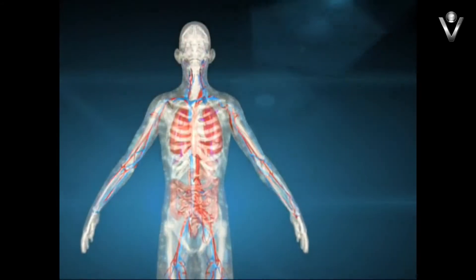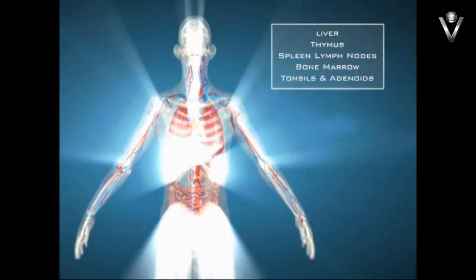The phagocytes transport the beta-glucan to immune organs throughout the body via the lymphatic system.